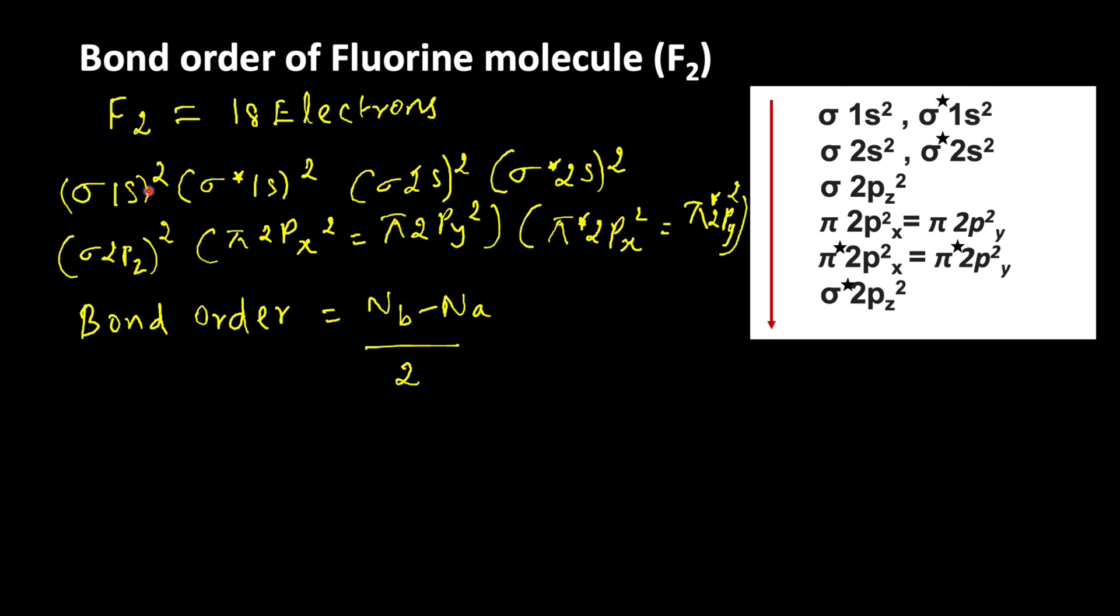So now let us count the bonding electrons. Sigma 1s: 2, sigma 2s: 2, so 2 plus 2 is 4, then 6, 8, 10. So total 10 bonding electrons are present.